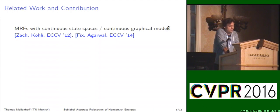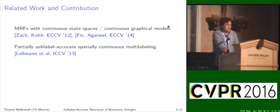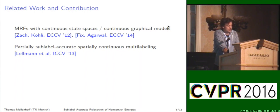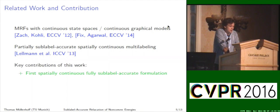There is some related work from the discrete optimization community: Markov Random Fields with continuous state spaces, also called continuous graphical models, proposed by Zach and Kohli in 2012 and analyzed by Fix and Agarwal in 2014, but these are formulated in a spatially discrete setting, whereas here we consider the spatially continuous setting. A sub-label accurate spatially continuous multilabeling method was already proposed by Lellmann et al. in 2013, but they focused solely on the total variation regularizer and on vectorial labels and labels on manifolds. For the setting considered here, their method reduces to the method from Pock from 2008, so it has the same label bias.